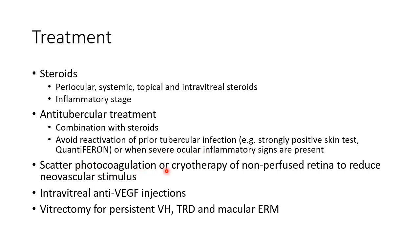Scatter photocoagulation or cryotherapy of non-perfused retina can be done in cases of Eales disease to reduce the neovascular stimulus. Intravitreal anti-VEGF injections can also be given. Vitrectomy can be done when there are complications like persistent vitreous hemorrhage, tractional retinal detachment, and in cases of macular epiretinal membrane.